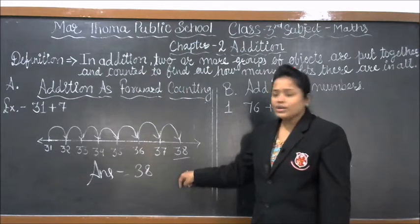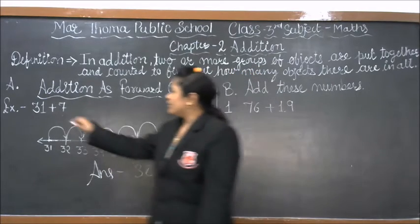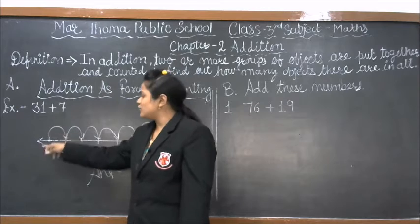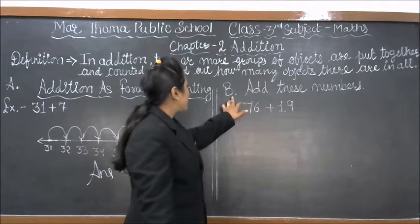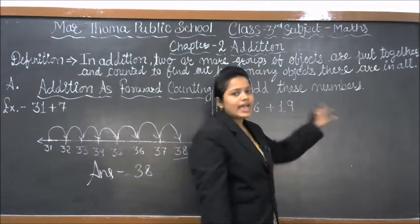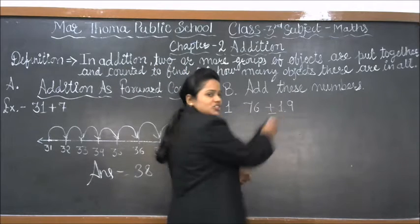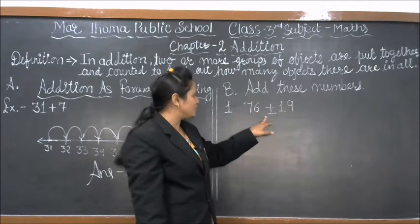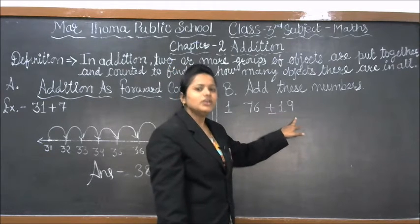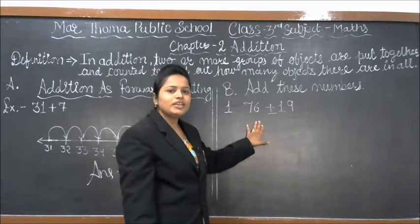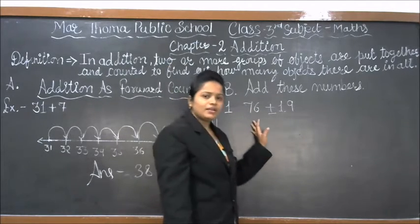Like this we have to perform all these questions. We make a series and jump according to the second number. In our second portion, we have to add these numbers. We have 76 plus — this is the sign of addition. So in the first question, 76 plus 19, we have to add according to the place value chart.